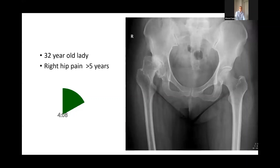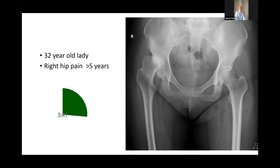Then I'll proceed to the examination. Besides doing a quick general examination, I'll do a focused examination, focusing on the range of movement of the hip, the limb length discrepancy between both sides, and the rotational profile of the femur in terms of the anteversion and rotation. I would also want to know about the strength of the abductor muscle as this will influence my decision.